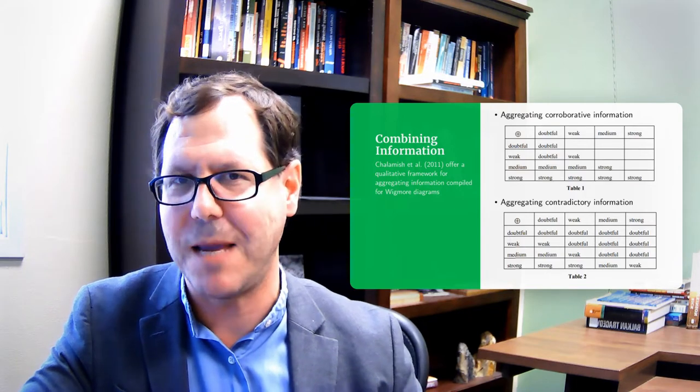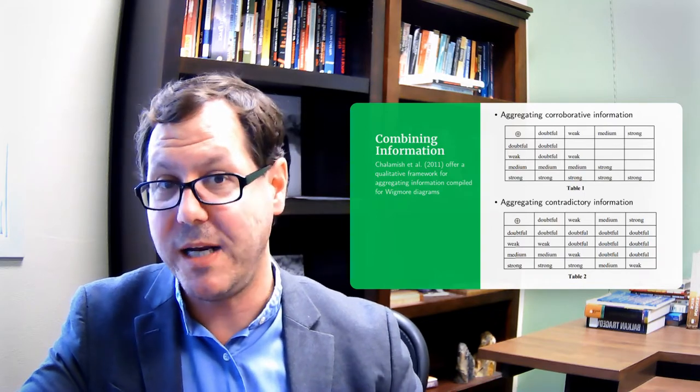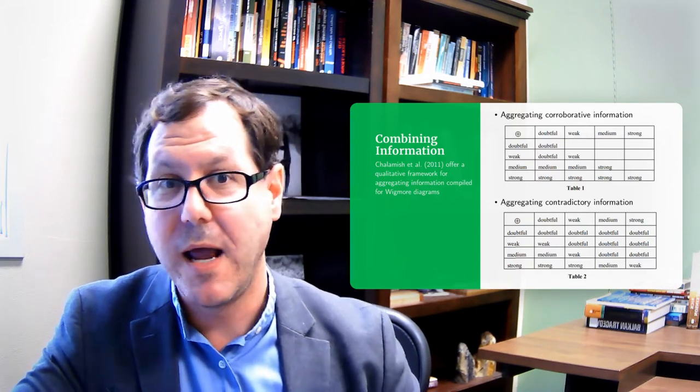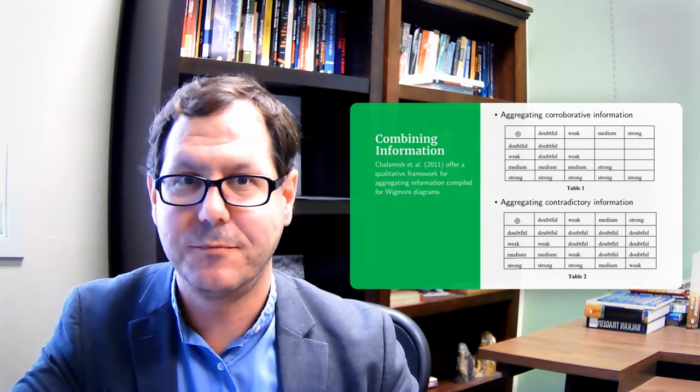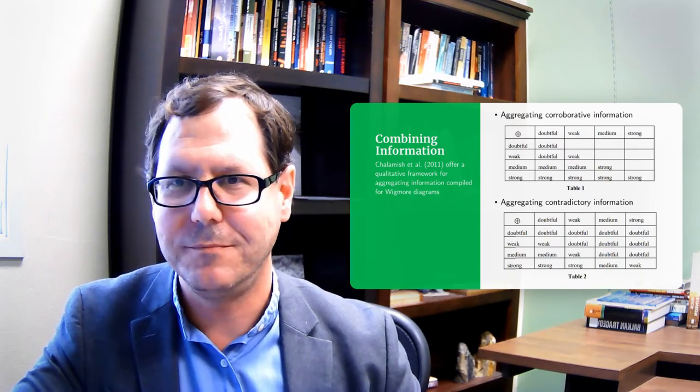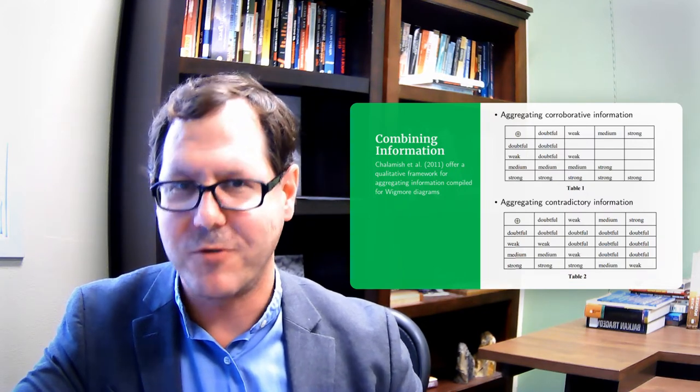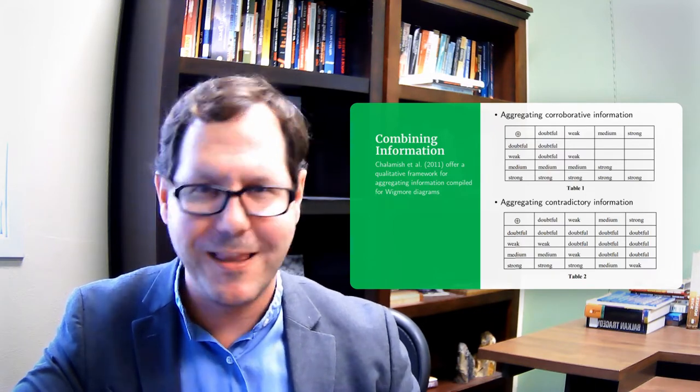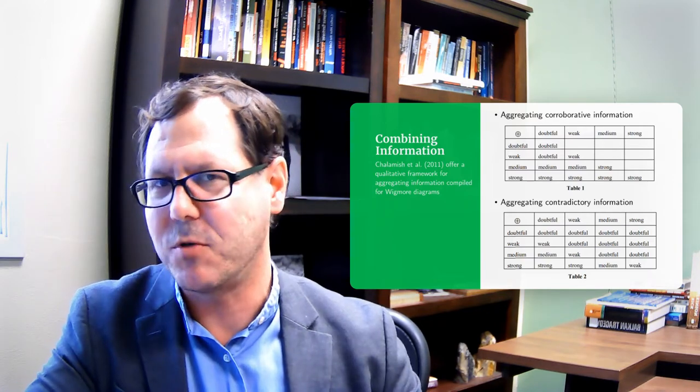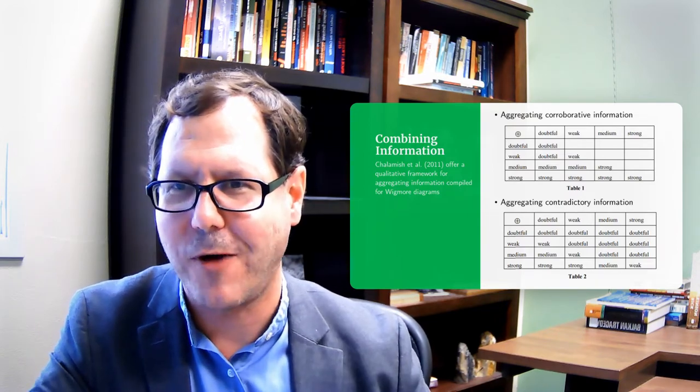And the solution that they came up with is a qualitative one in which we look at each piece of information and we decide if the information is strong or medium or weak or doubtful. And then we can aggregate it together using these tables. So there's a table for aggregating corroborative information. If you have information that's doubtfully supporting a position and you add more information that's doubtful, the end result is still doubtful. If you have strong information, you add more information that confirms, the information stays strong or your conclusion stays strong. Medium strength information can aggregate up and become strong information. So there's an additive effect, but it doesn't always progress in the most linear way.